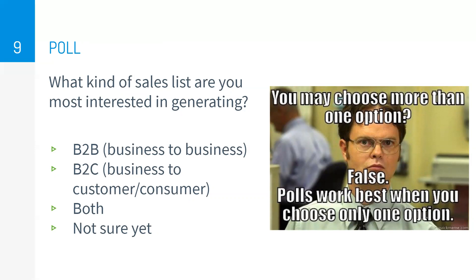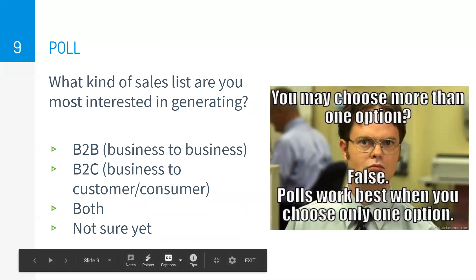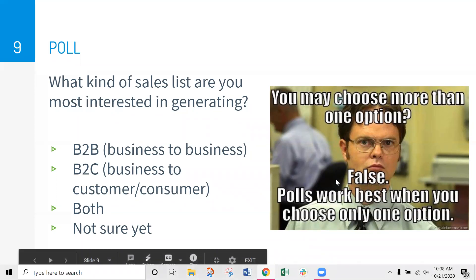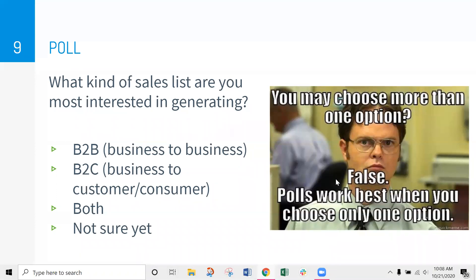Before we jump in, I want to learn a little bit more about what kind of list you're most interested in. I'm going to launch a poll — take a second and answer: what kinds of sales lists are you most interested in generating? Are you interested in business-to-business, business-to-customer, maybe both, or are you not sure and just taking the class to see what processes you can use at the library? It looks like we have a very small class, but most of you are interested in B2C — marketing to consumers — and we have a couple of people interested in both. So thanks so much for answering that.